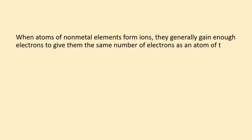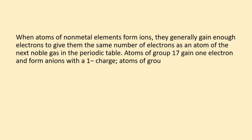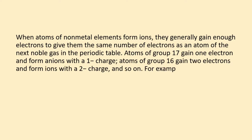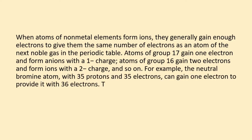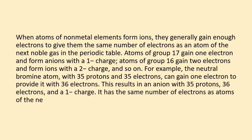When atoms of non-metal elements form ions, they generally gain enough electrons to give them the same number of electrons as an atom of the next noble gas in the periodic table. Atoms of group 17 gain one electron and form anions with a 1- charge. Atoms of group 16 gain two electrons and form ions with a 2- charge, and so on. For example, the neutral bromine atom, with 35 protons and 35 electrons, can gain one electron to provide it with 36 electrons. This results in an ion with 35 protons, 36 electrons, and a 1- charge. It has the same number of electrons as atoms of the next noble gas, krypton, and is symbolized Br-.